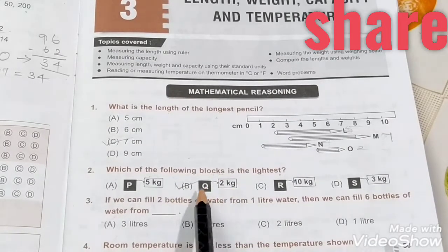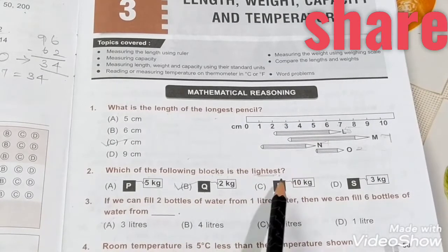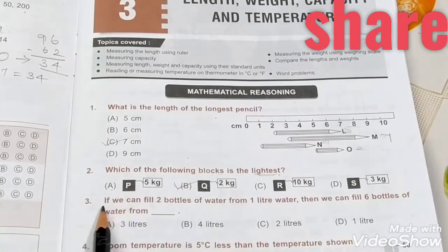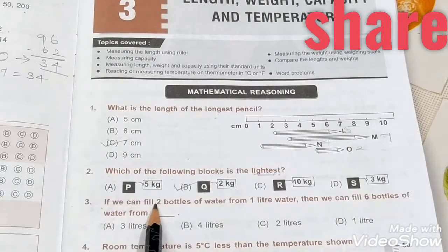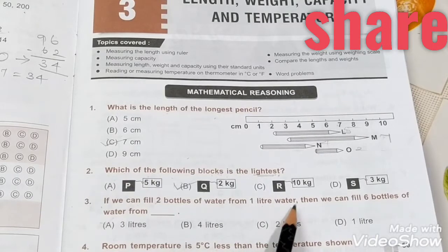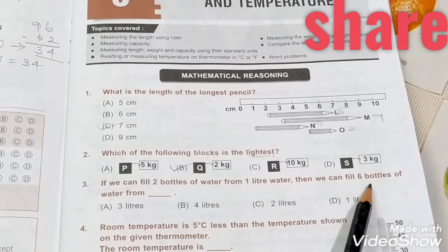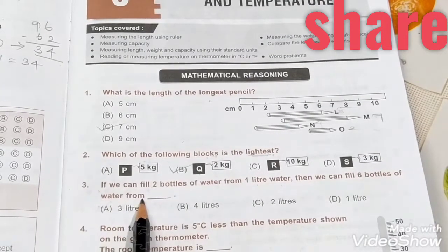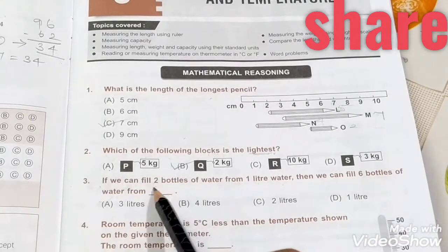Third question: if we can fill two bottles of water from one liter, then we can fill six bottles of water from how many liters? Two bottles equal one liter.